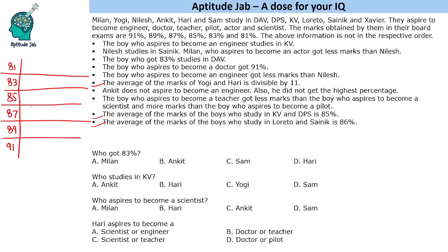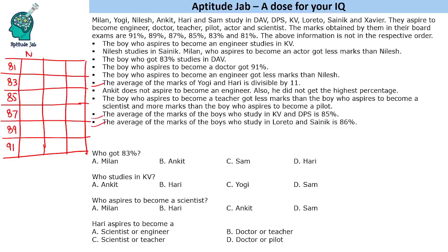The remaining things — name, school, and aspirations — we can fill in any order. Let's fill the direct information first: the student with 83% studies in DAV, so this person studies in DAV. The boy who aspires to become a doctor got 91%, so the doctor is the student with the highest score.